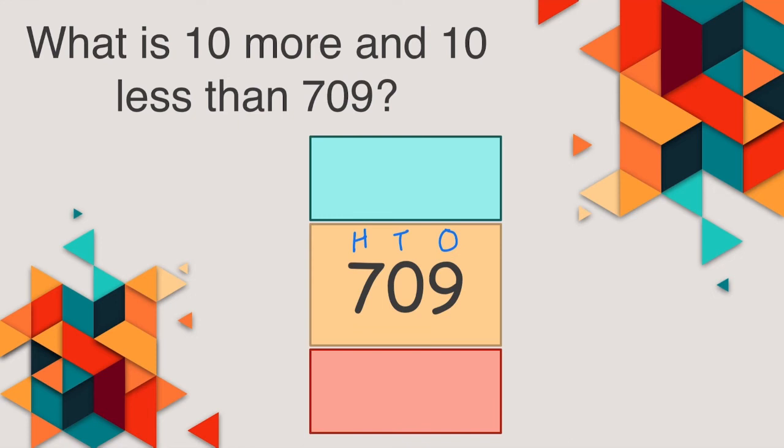Next one, 709. 10 more than 709 is 719. What about 10 less than 709? Look at both these digits together. So 10 less than 709 would be 699.